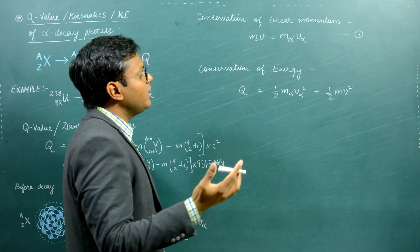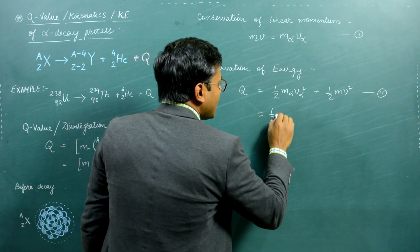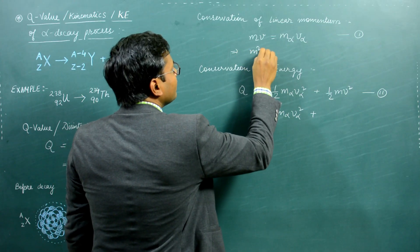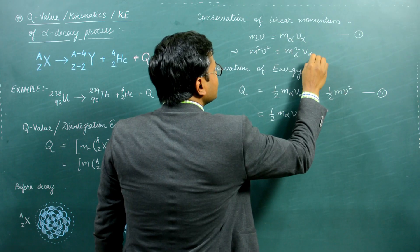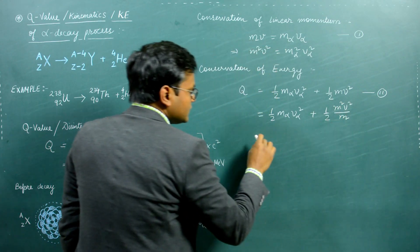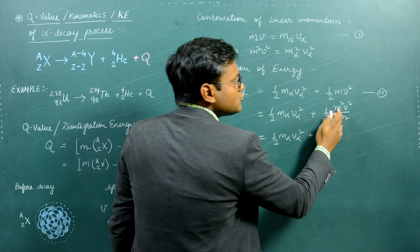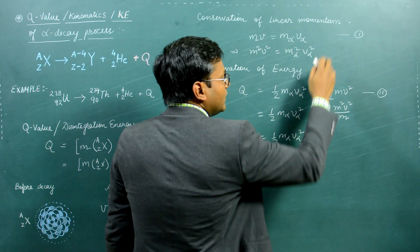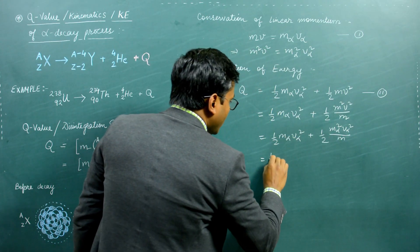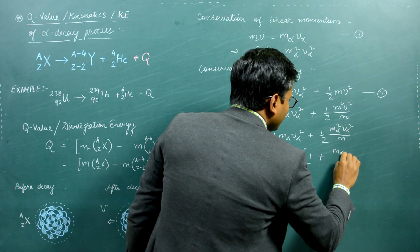Using conservation of momentum (point 1), we can eliminate the daughter kinetic energy term. From point 1, M²·V² equals M_alpha²·V_alpha², so the daughter kinetic energy becomes half of M_alpha²·V_alpha² divided by M. Factoring out, the Q value equals half M_alpha·V_alpha² times (1 + M_alpha/M), where the first factor is the kinetic energy of the alpha particle.